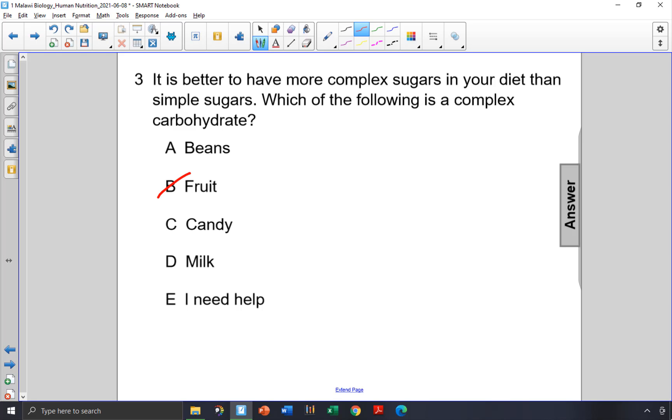Candy, which is made of table sugar, contains sucrose. Sucrose is made up of fructose and glucose combined, which is still a simple sugar, so choice C is not the correct answer. Choice D, milk, contains lactose.